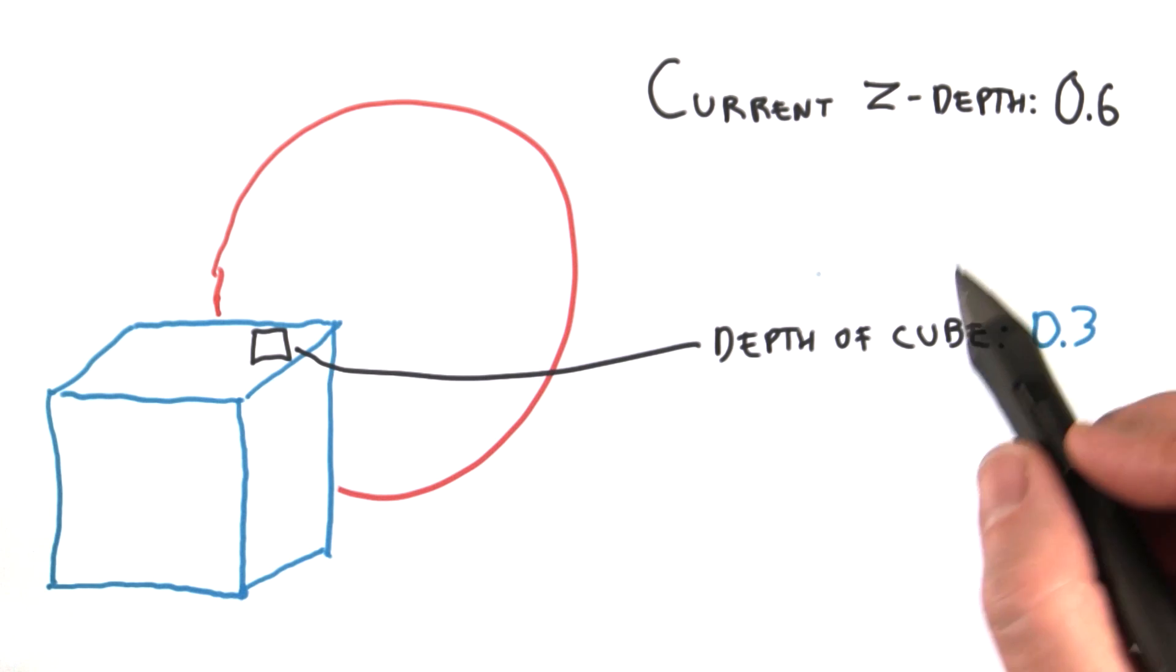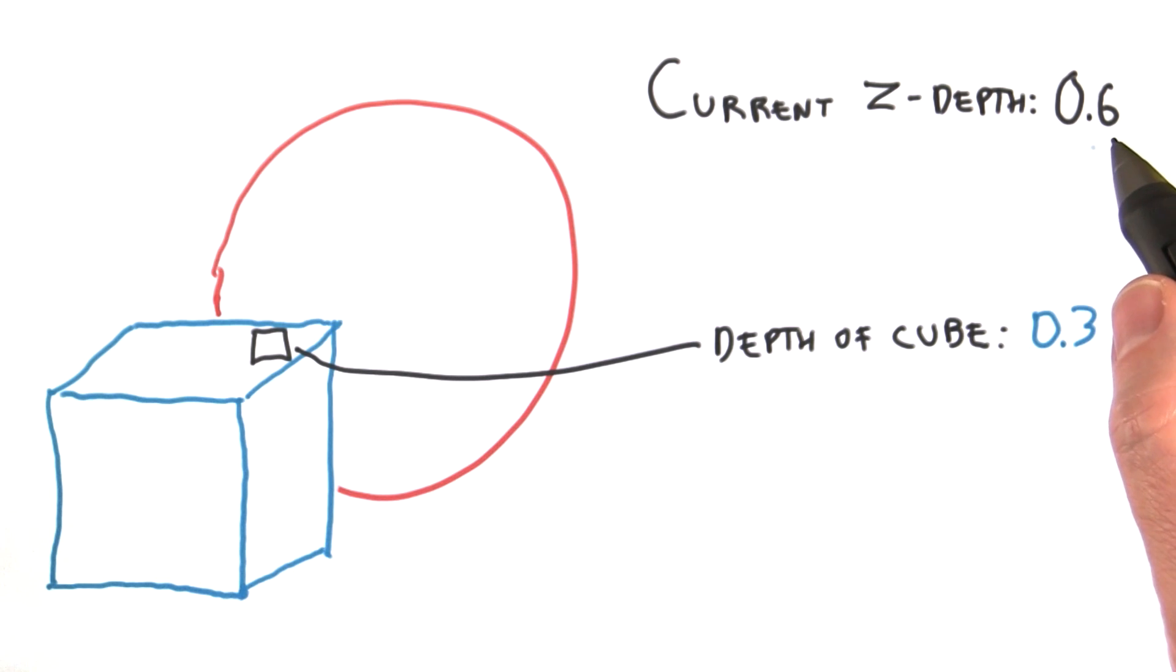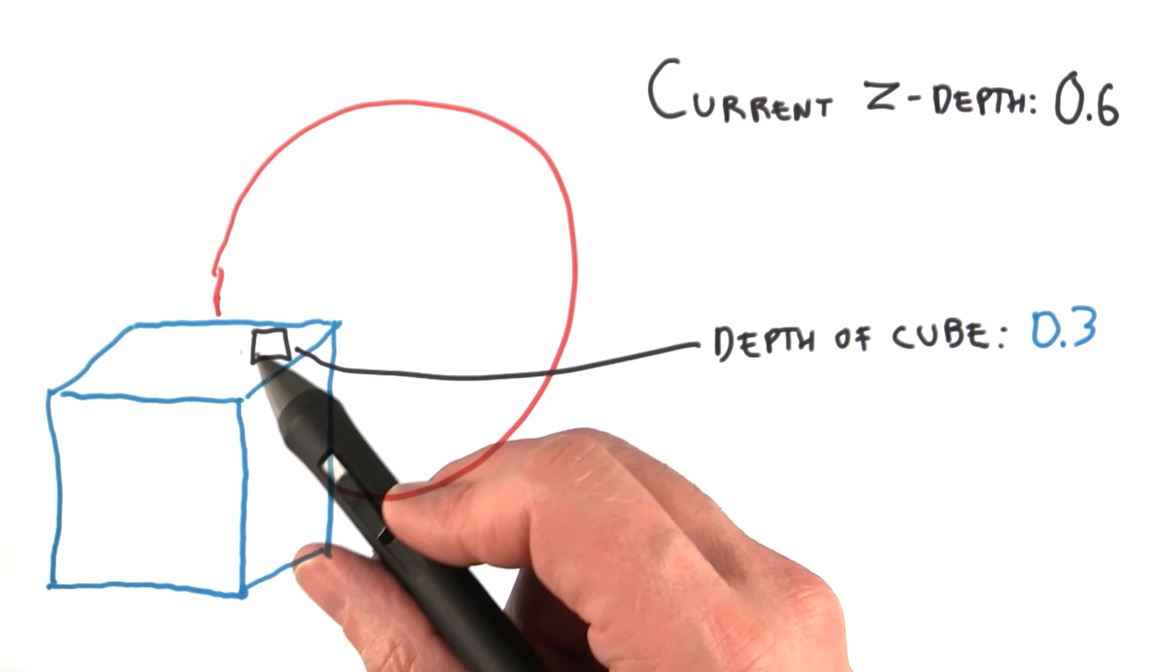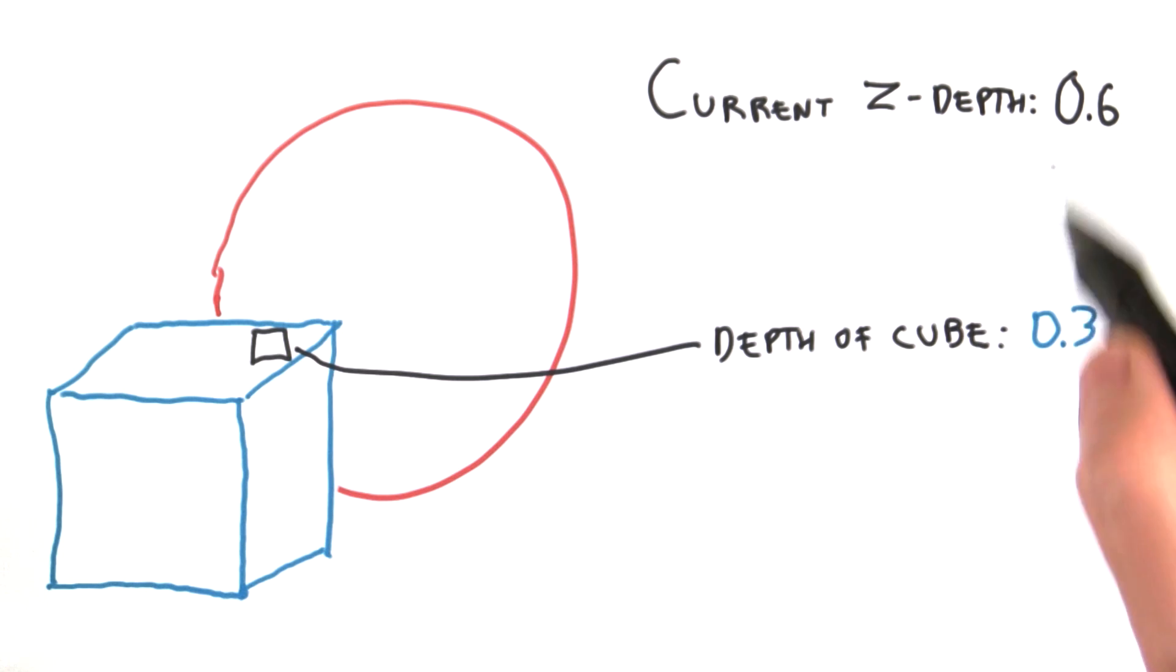Next, say we draw a cube. The cube's depth at this pixel is 0.3, which is closer than the 0.6 that we have stored for what the sphere did. So since it's closer, we use the cube's color at this pixel, and replace this value—0.3 replaces 0.6.